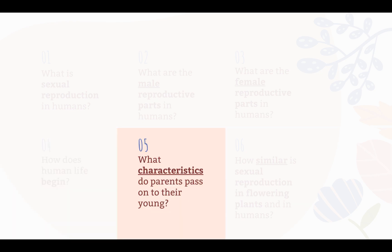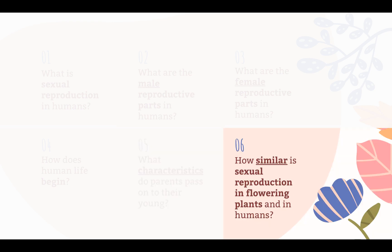Five: parents pass two types of characteristics on to the young — observable, such as the type of earlobe and type of eyelid, and non-observable characteristics, such as blood type. Six: sexual reproduction in flowering plants and in humans involves both the female and male reproductive parts. Both involve the fusion of the female and male reproductive cells, and when flowering plants or humans reproduce, they pass on characteristics from one generation to another.